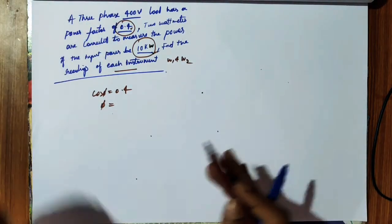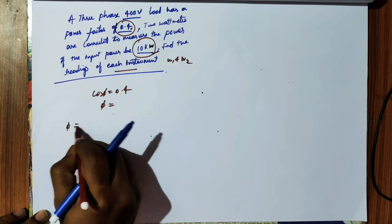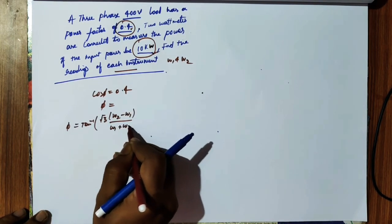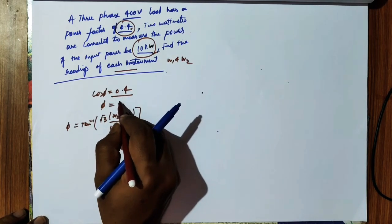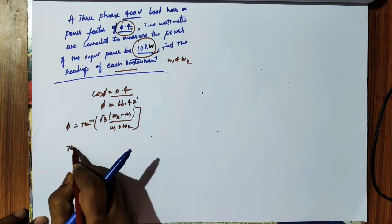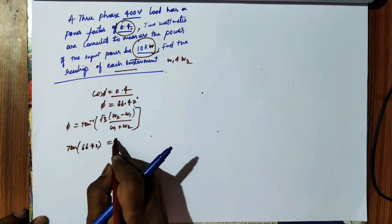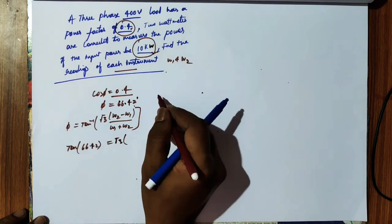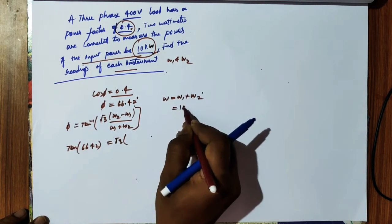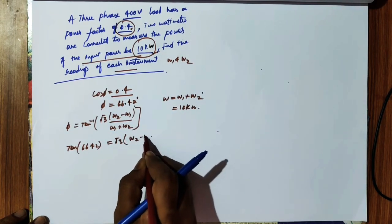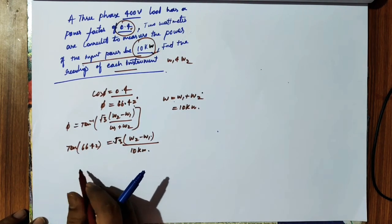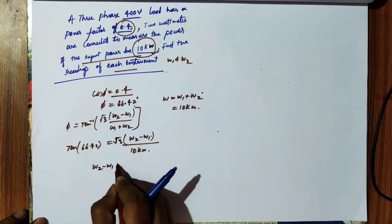The answer comes directly from the formulas. Since cos(phi) = 0.4, we find phi = 66.42°. Therefore tan(66.42°) = √3 × (W2 - W1) / (W1 + W2). Since the input power W1 + W2 = 10 kilowatts, substituting gives: W2 - W1 = tan(66.42°) × 10 / √3 = 13.23 kilowatts.